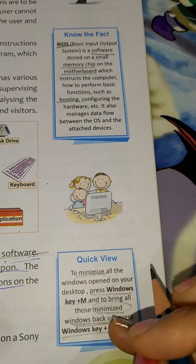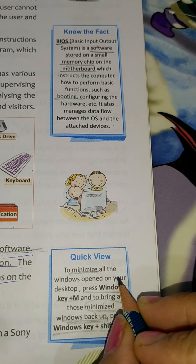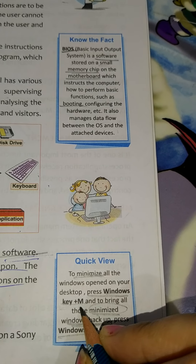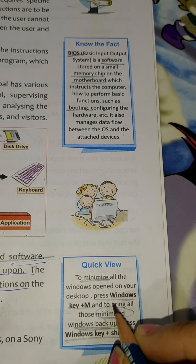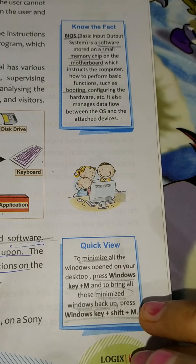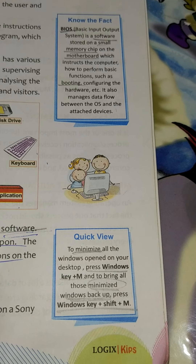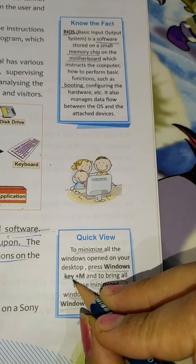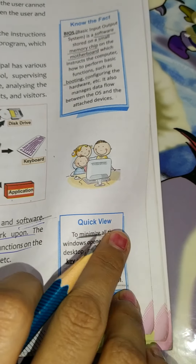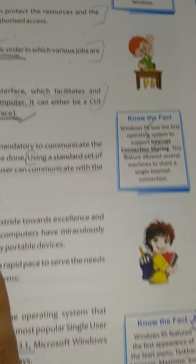Next, these shortcuts you have to learn. To minimize all windows, press Windows key + M. To restore minimized windows, press Windows key + Shift + M. The Windows key is at the bottom of the keyboard.